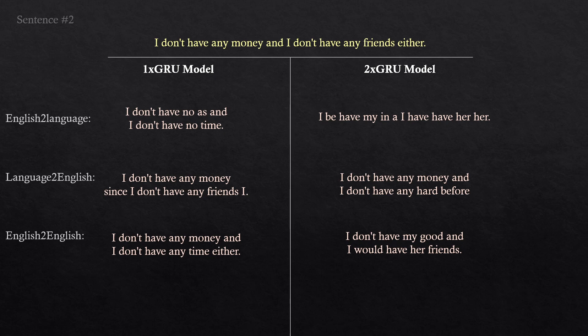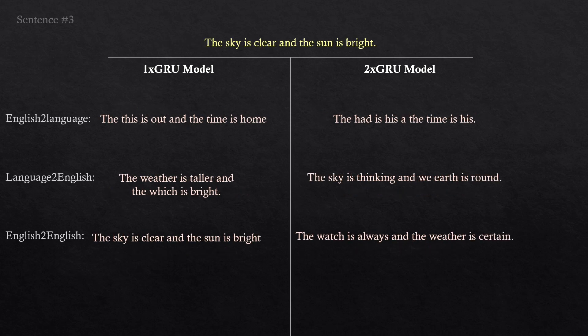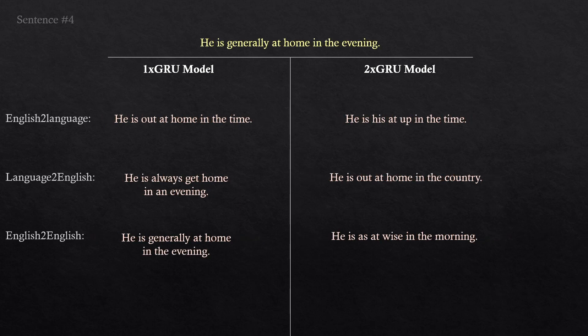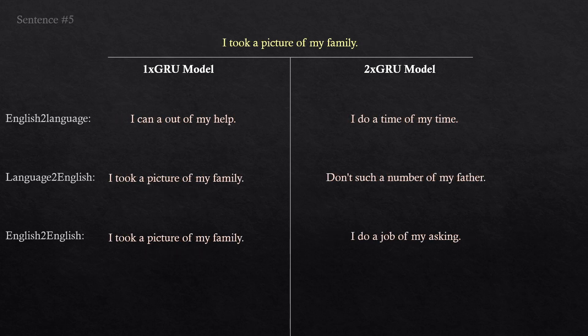We'll run through a couple more sentences without discussing them in too much detail. In this third example, you can see that the first model again clearly outperformed the second one. But there is something else interesting: not only does the second model realize that the earth is round, but both models also seem to know that words like 'weather' and 'earth' are linked to 'sky' and 'sun'. In the fourth example, the models also seem to know that words like 'evening' and 'morning' are similar — this probably has to do with the embedding layer we spoke about earlier. The same is true of words like 'family' and 'father' in the next example.